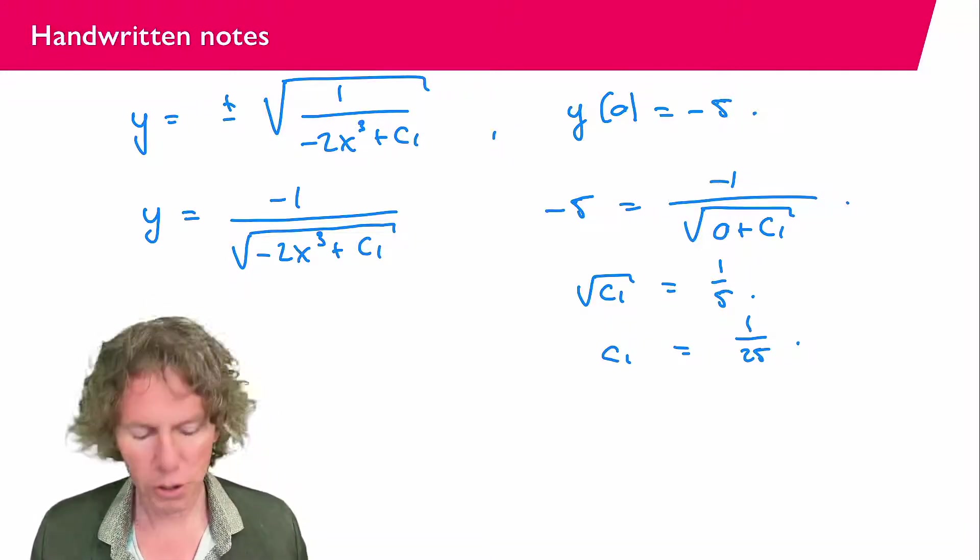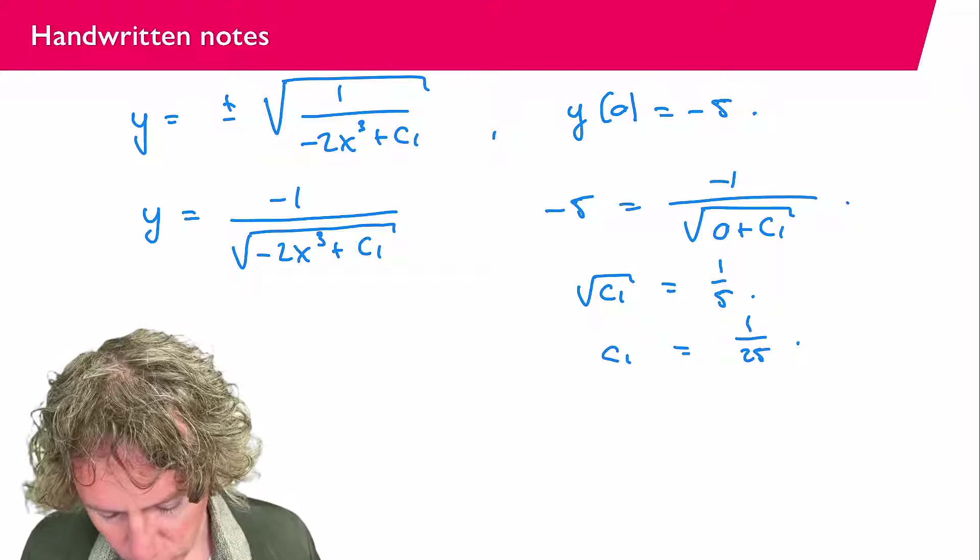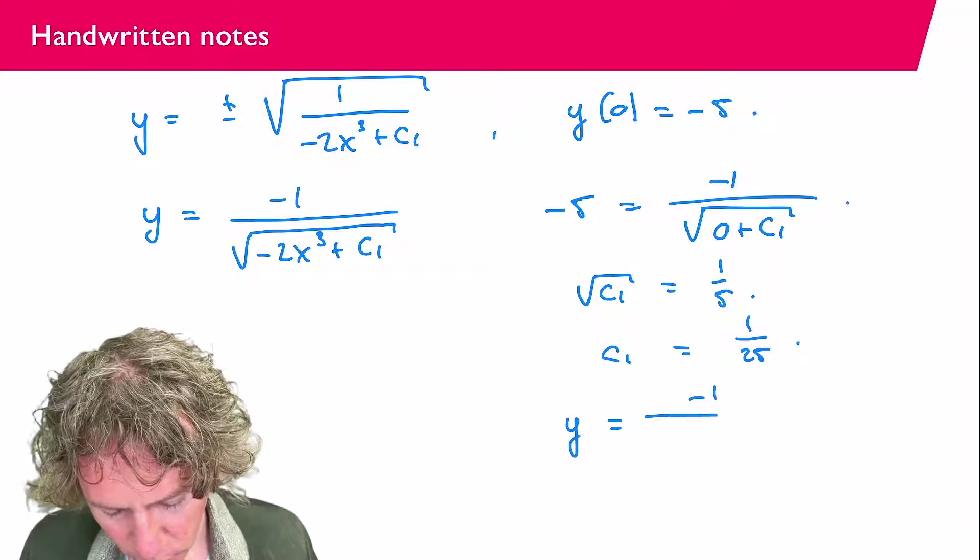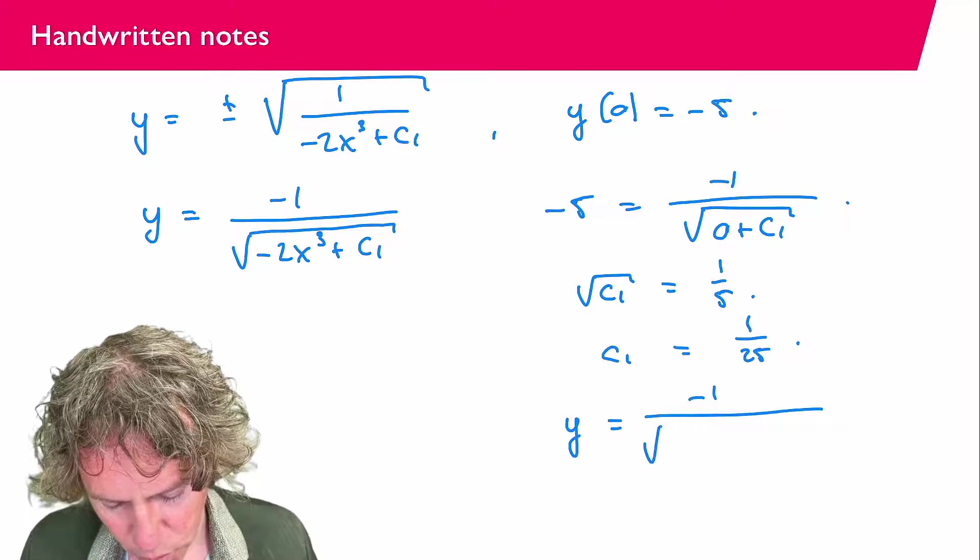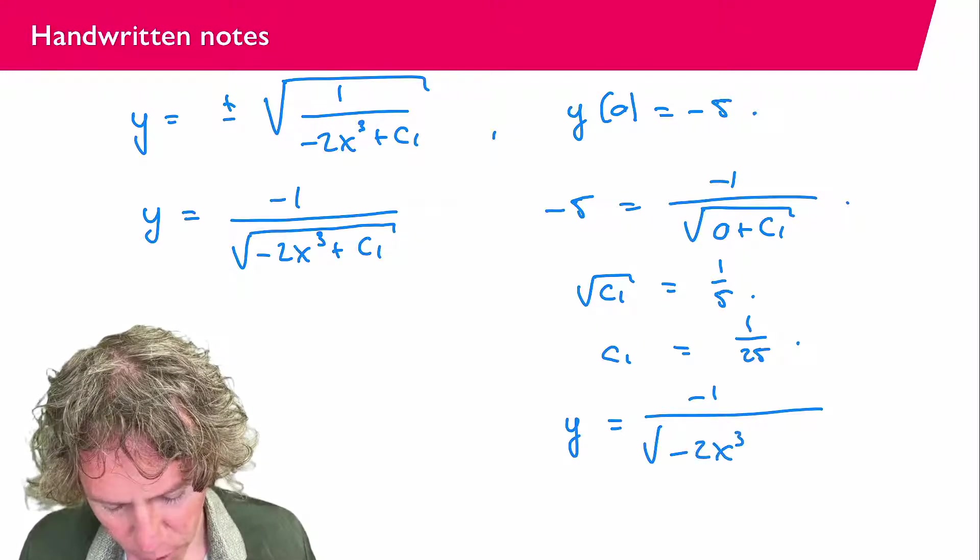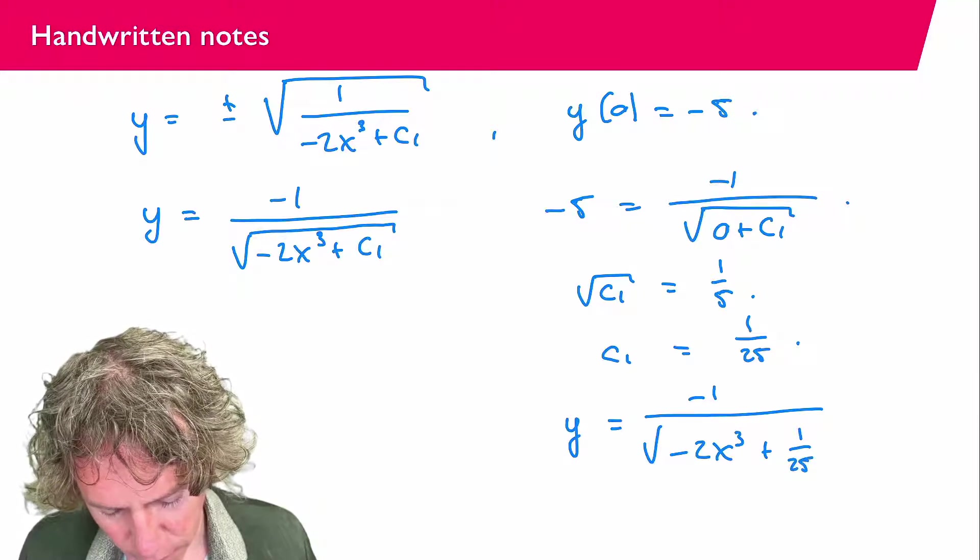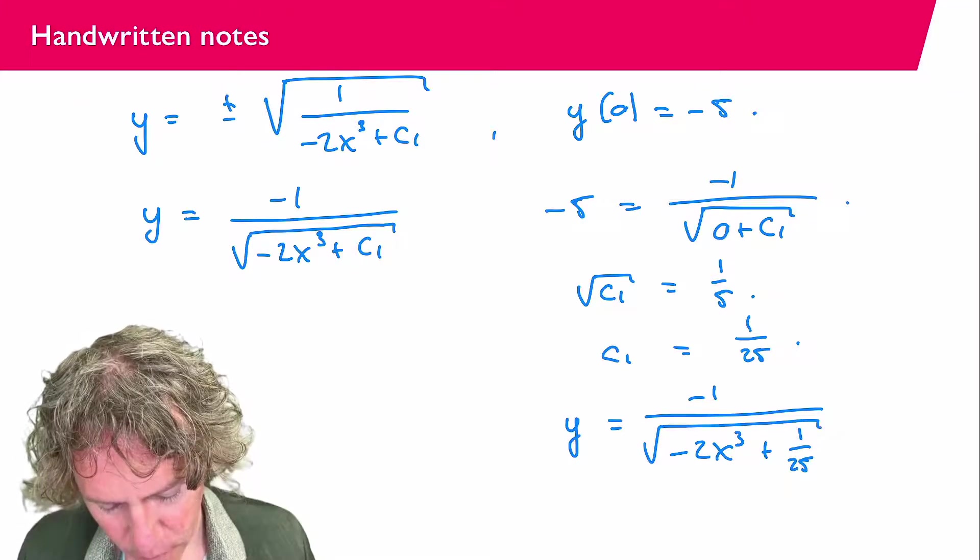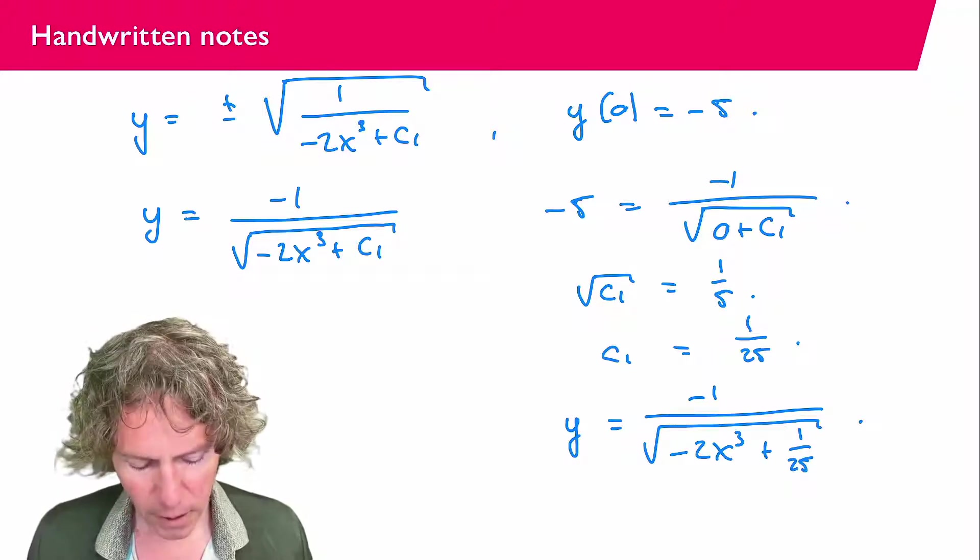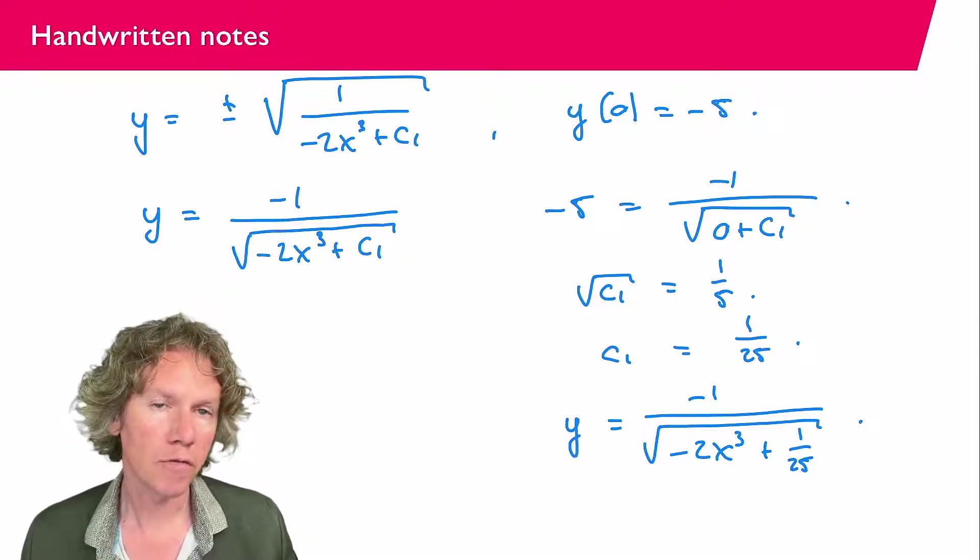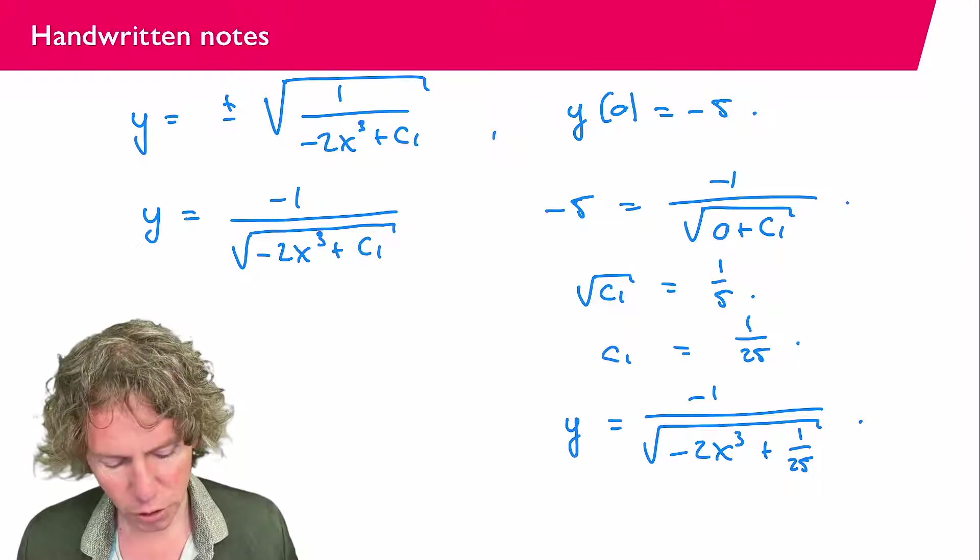So the conclusion is that the function that we're looking for, y equals minus 1 over square root minus 2x to the power 3 plus 1 over 25, and that answers the question.